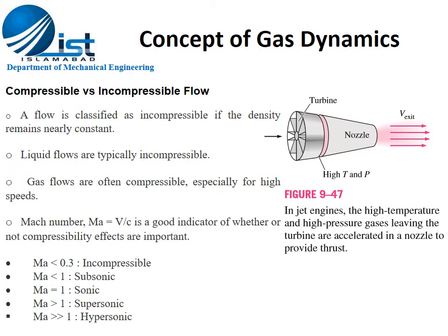In this slide we will learn about the difference between compressible and incompressible flow — basic concepts needed before understanding the jet engine. A flow is incompressible if the density remains nearly constant; examples are liquid flows. Compressible flows are those where the density does not remain constant; gas flows are generally compressible.